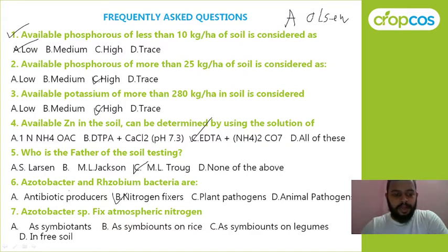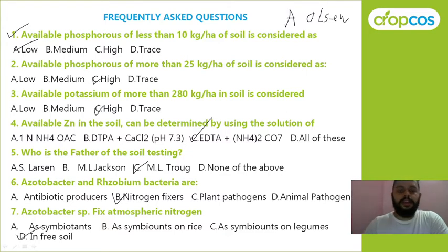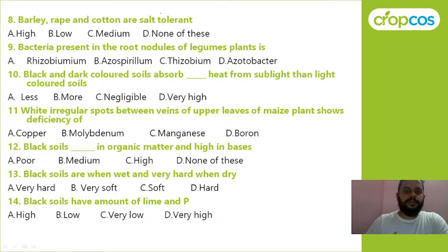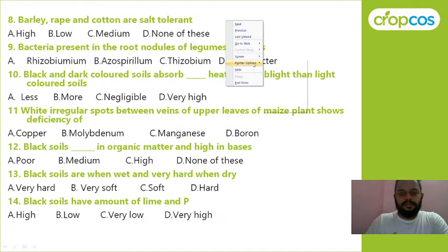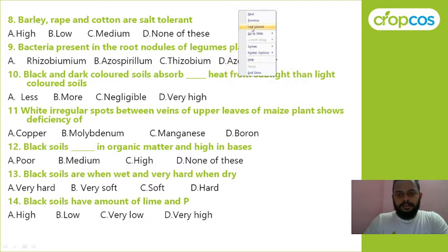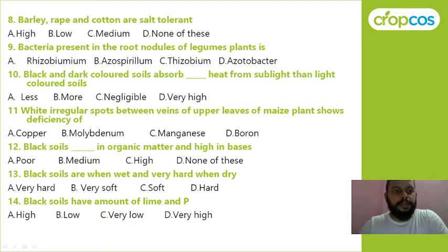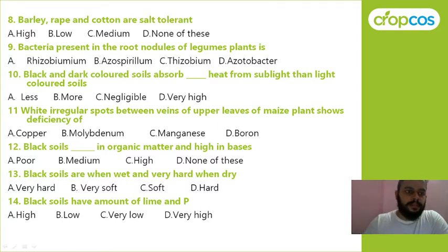Azotobacter species fix atmospheric nitrogen as symbionts of rice, symbionts of legumes, or in free soil? The correct answer is in free soil. Next: barley, rape, sugarbeet, and cotton are salt tolerant. Their classification — high, low, medium, or none — they are highly salt tolerant crops.